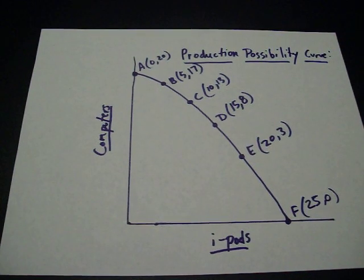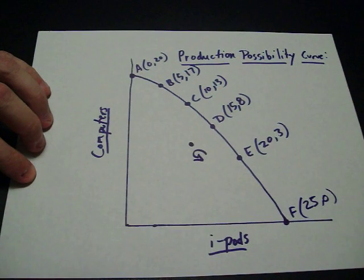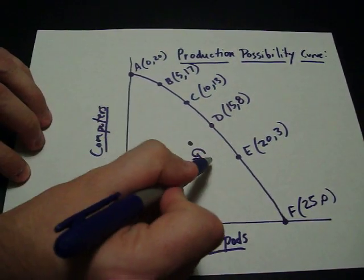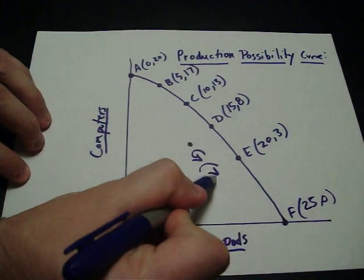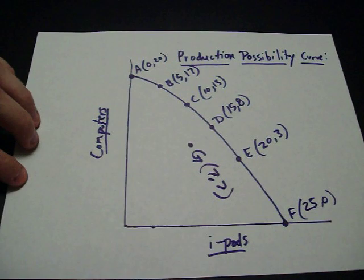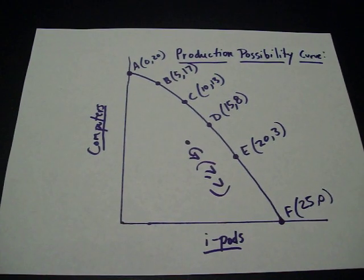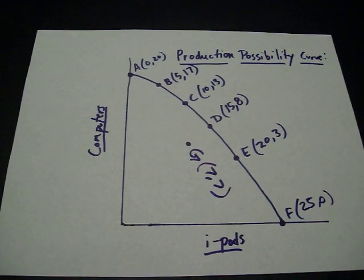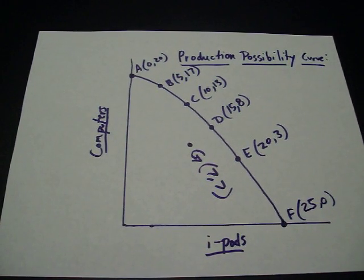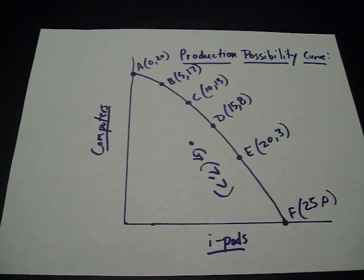Let me add in another point. Let me call it point G. And let's say that at point G this is where they're producing a combination of let's say seven iPods and seven computers. They could produce at point G. They wouldn't want to because they're not making as much as possible. Only points A to F are what is the maximum that they are capable of producing. This point G is called the underemployment of resources. They're not making as much as possible.